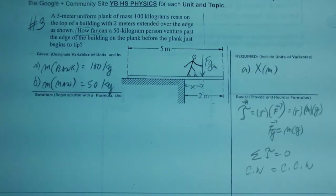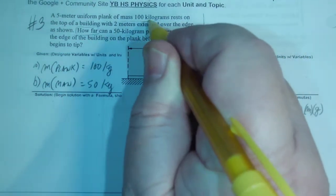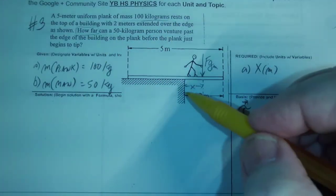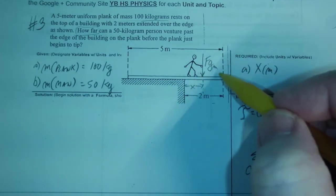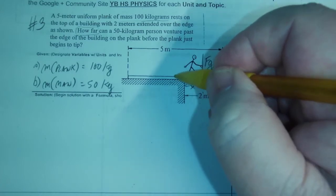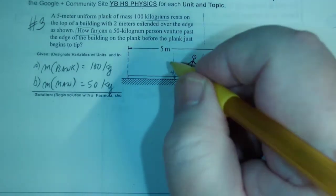Now the other force that we have is the weight of the plank, and it says that the plank is 100 kilograms. Where will the weight be? In the middle. So let's say about here, you have the weight of the plank.